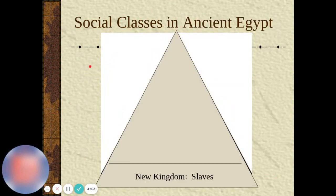Here's the social class structure — slaves are at the very bottom.